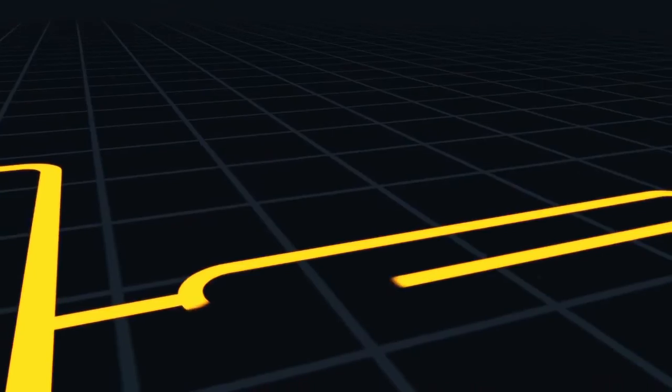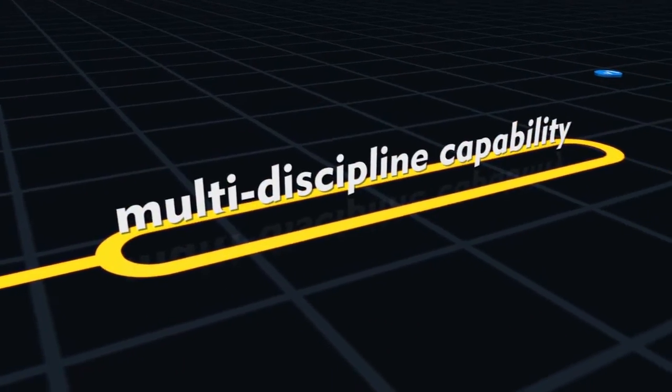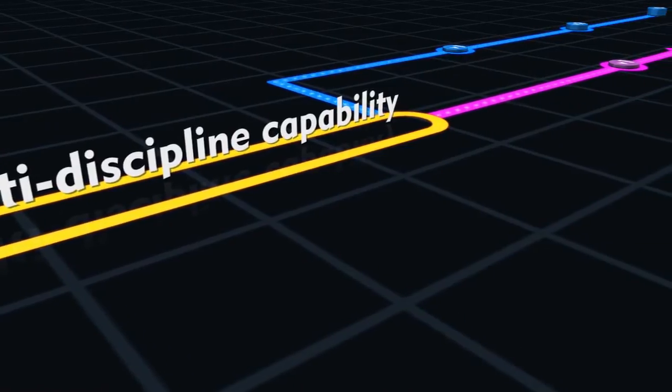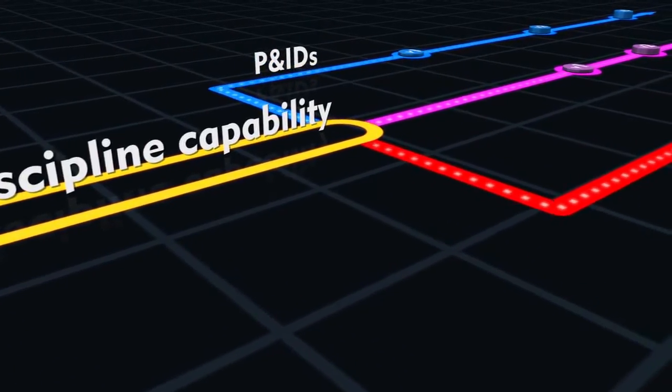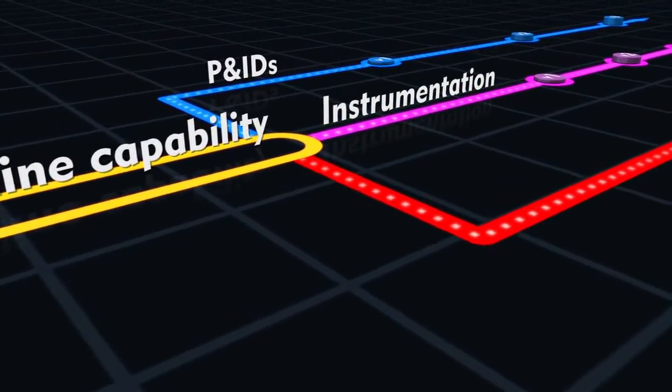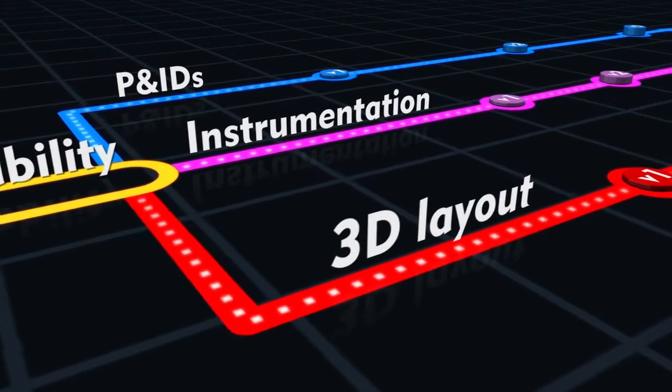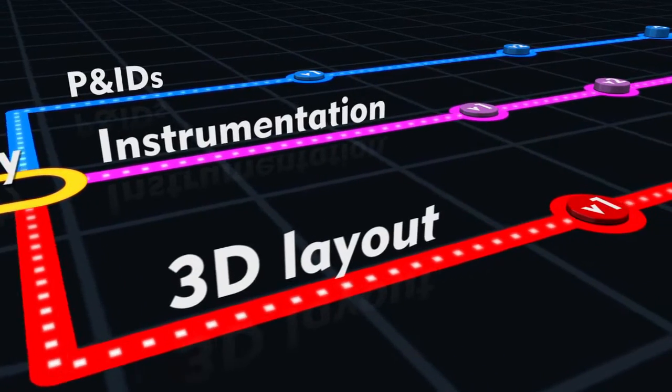The engineer and design products provide integrated multi-discipline capabilities. In the real world, engineering and design is a dynamic process. P&IDs, instrumentation and electrical, and 3D layout are evolving in parallel throughout the project lifecycle.